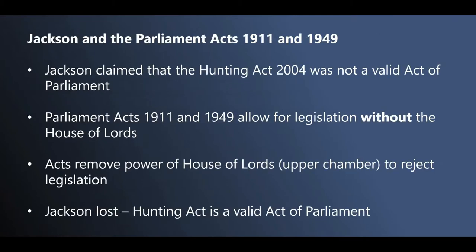Now back to Jackson. Jackson challenged the validity of the Hunting Act of 2004, claiming it was not a real Act of Parliament because it was made under the Parliament Acts of 1911 and 1949. The Parliament Acts allow for legislation to be passed without the consent of the second chamber of the UK Parliament, the House of Lords. The Parliament Acts removed the ability of the House of Lords to reject legislation approved by the House of Commons — the Lords could only delay legislation, not block it entirely. Jackson lost his case, but the judges ruled that legislation made under the Parliament Acts is still valid legislation.